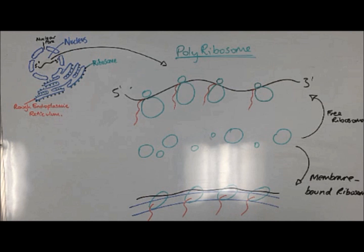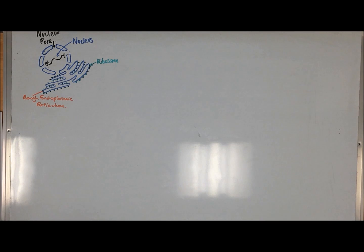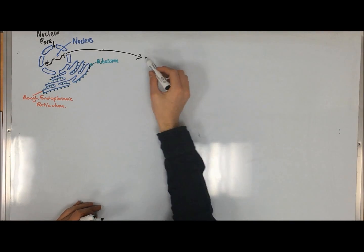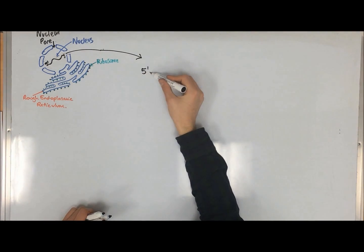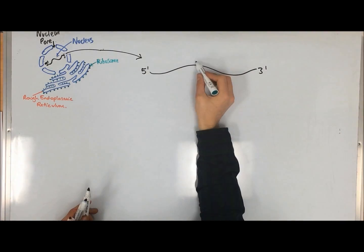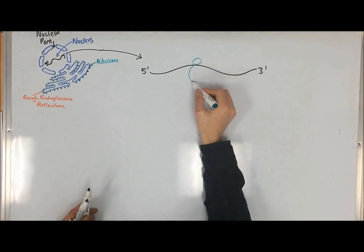Membrane-bound ribosomes synthesize proteins that are translocated into the lumen of the ER, also known as water-soluble proteins and transmembrane proteins, which are permanently membrane-bound. Ribosomes that are membrane-bound give the rough endoplasmic reticulum its distinct feature. This is a clear difference to the smooth ER.